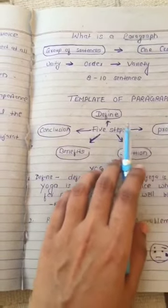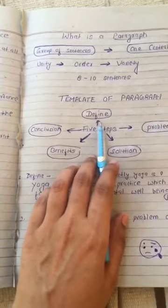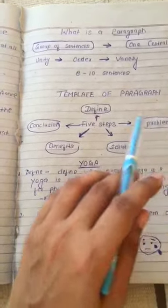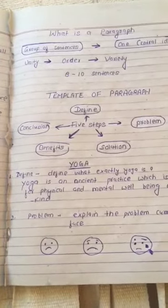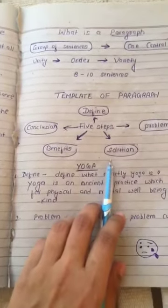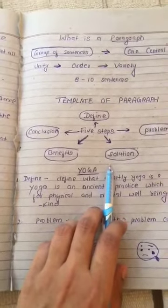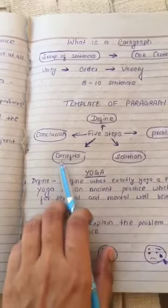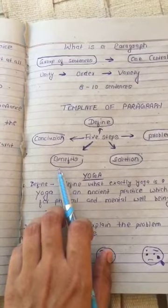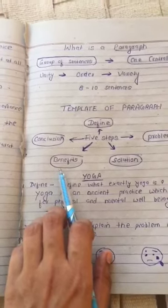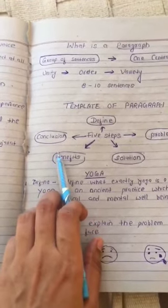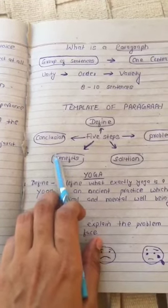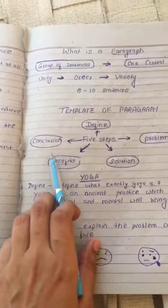The first step is to define the topic of the paragraph. The second step is to explain the problem we are currently facing. The third step is the solution — write the solution to resolve the problem. The fourth step is to state the benefits of the solution. The fifth and final step is the conclusion — conclude the paragraph in a positive way.